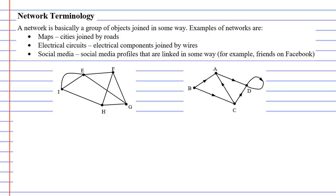A network is basically a group of objects joined in some way. So let's look at our two diagrams below.